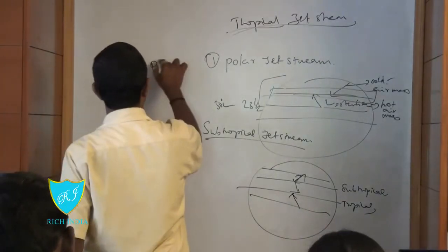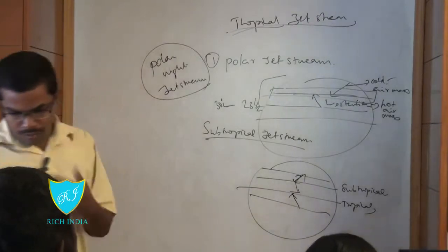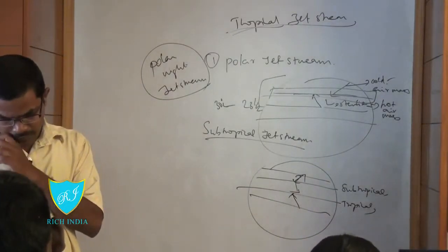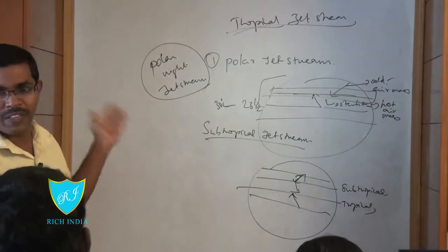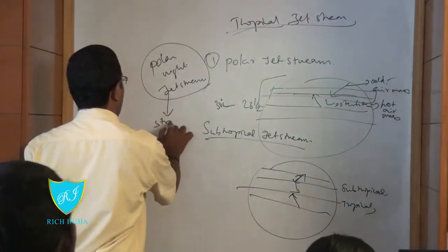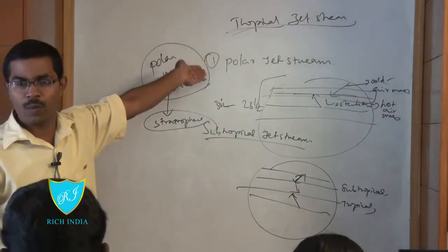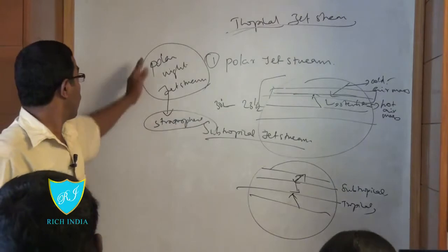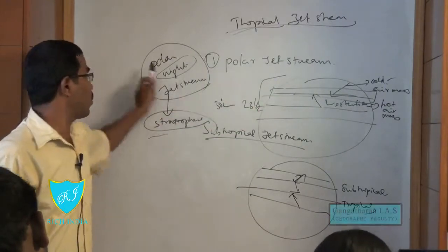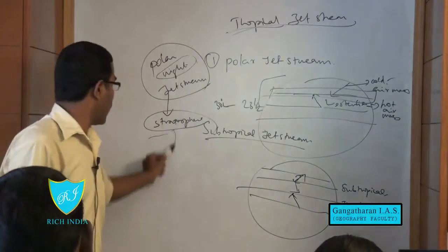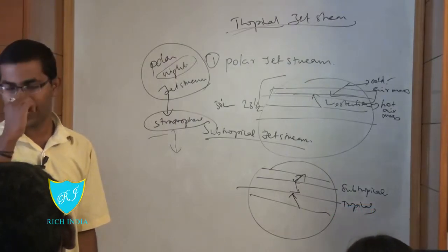There is also a polar night jet stream. This polar night jet stream is happening in the stratosphere. If the height of the jet stream is very high and it is in the polar region, we may call it a polar night jet stream. Through this jet stream, chlorofluorocarbons (CFCs) are transported, and this is what creates holes in the ozone layer.